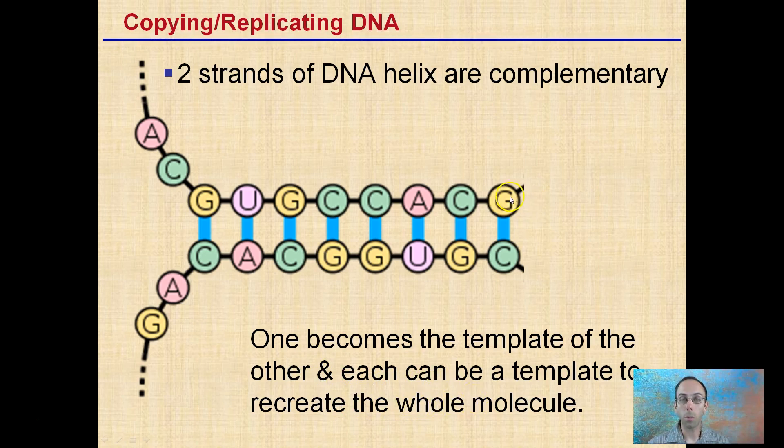What that means is where we have a G, there'll be a C down here. A C to a G, an A to a U, because in this case, we are making an RNA. The reason why we call them not identical is it's complementary. What is G binding with? C. What is C binding with? G. This is why it's called a complementary strand.